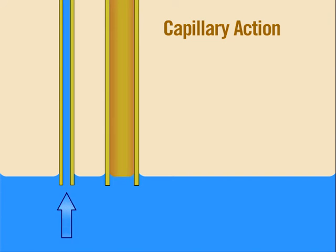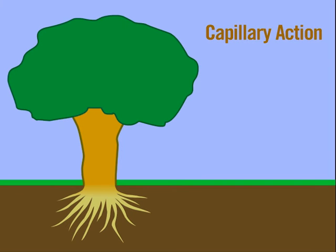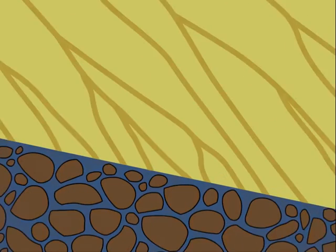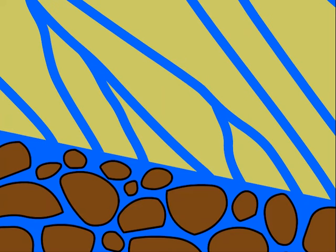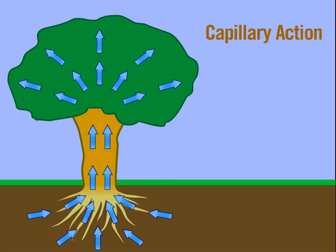If the tube or space is too large, the water won't flow up through it. This is how trees get their water from the ground, because wood is porous. Down in the roots, there are really small crevices and gaps that allow the water to flow upwards, eventually getting the water to all areas of the tree, right up to the top.